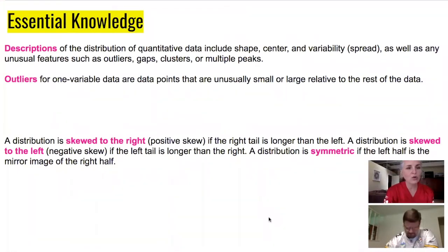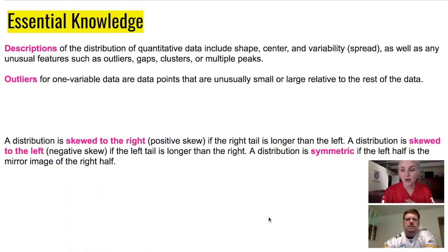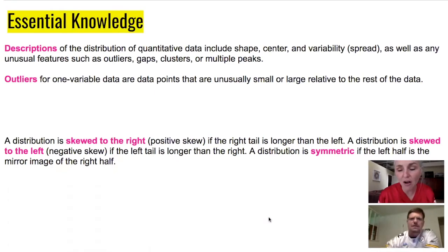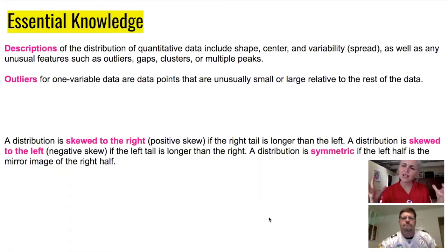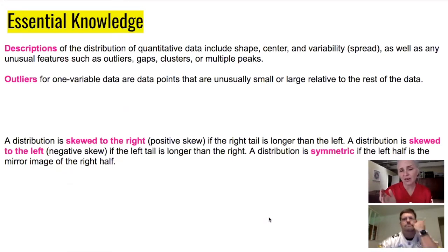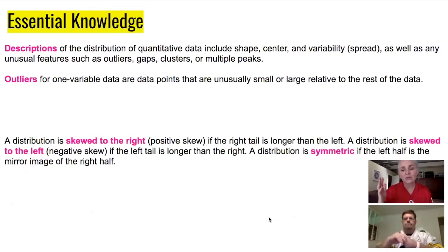When you are using descriptions of distributions of quantitative data, you want to include key pieces. Key pieces include things like: what's the shape of the graph, where does the center fall, what does a typical data point look like, what does the variability look like — and we're going to look at things like outliers, gaps, clusters, and peaks.